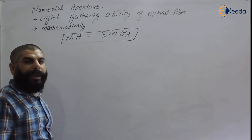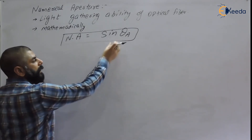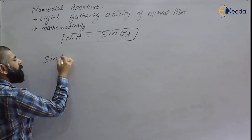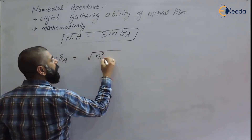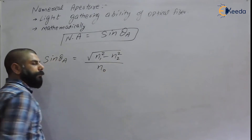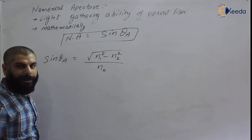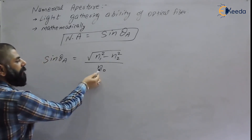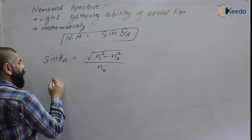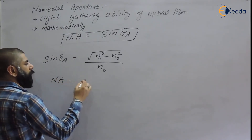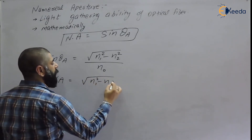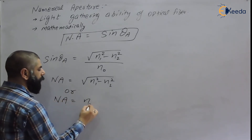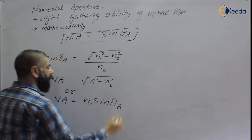Numerical aperture is nothing but the sine of the acceptance angle. From the previous derivation, sin(acceptance angle) = √(n1² − n2²) / n0. In most cases, the optical fiber is placed in air, so n0 = 1. Therefore, numerical aperture = √(n1² − n2²).